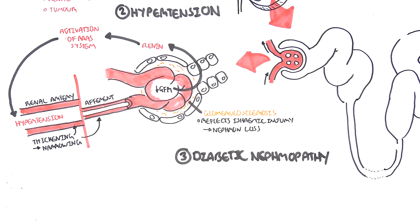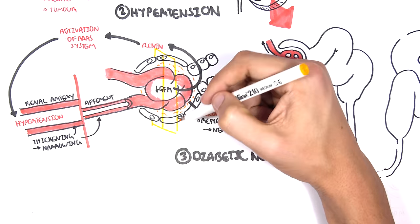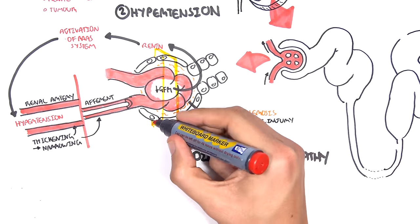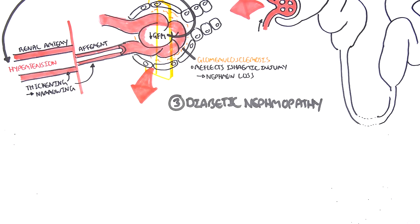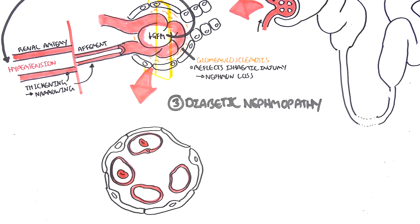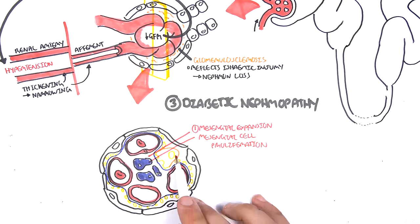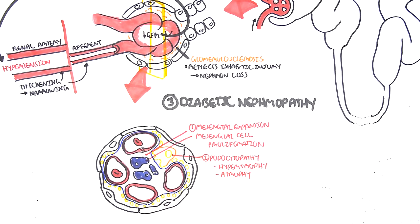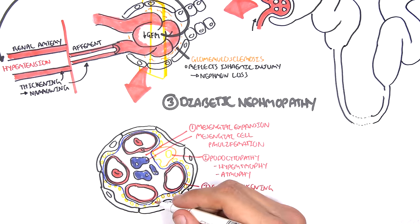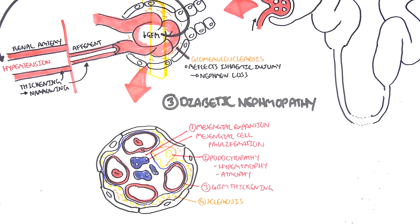Next, let's look at the most common cause of chronic kidney failure: diabetes. A major complication of diabetes is diabetic nephropathy, which eventually leads to chronic kidney failure. The four main changes seen in diabetic nephropathy are: mesangial expansion and proliferation; podocytopathy, including podocyte hypertrophy and eventually atrophy; glomerular basement membrane thickening; and sclerosis — which is similar to what we see in hypertension.